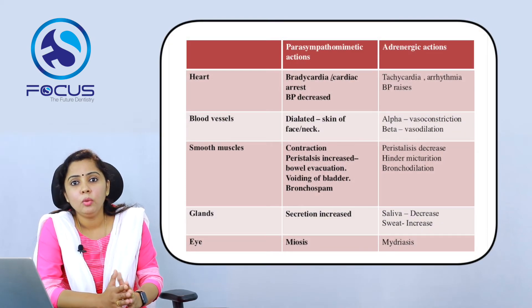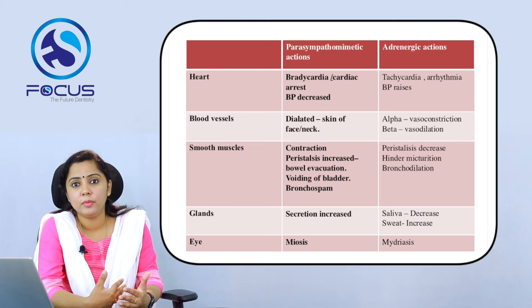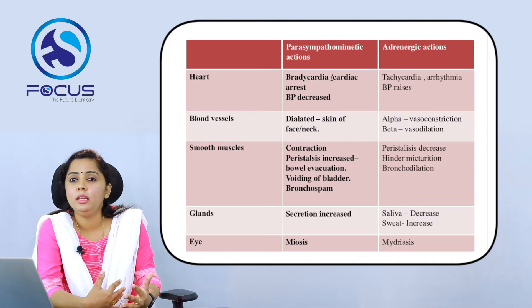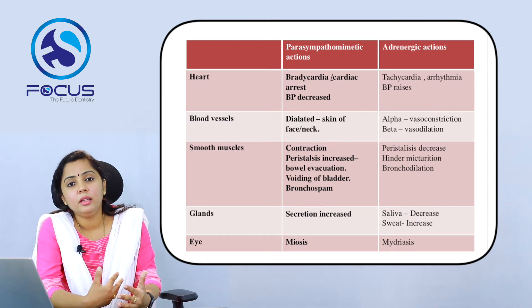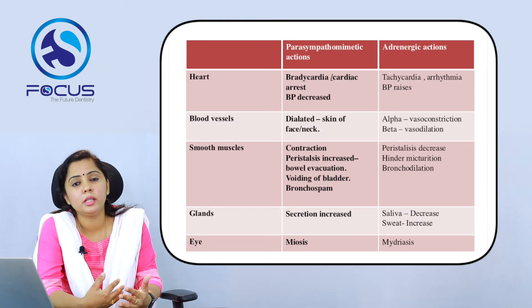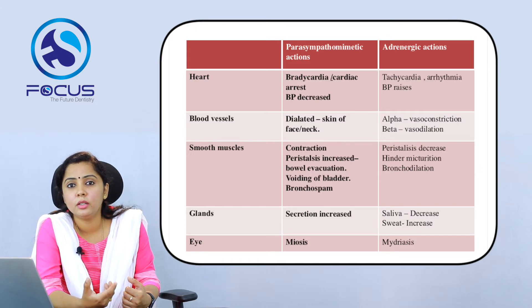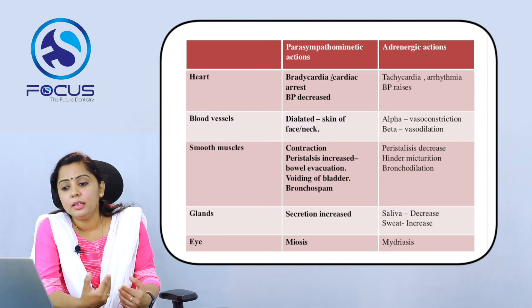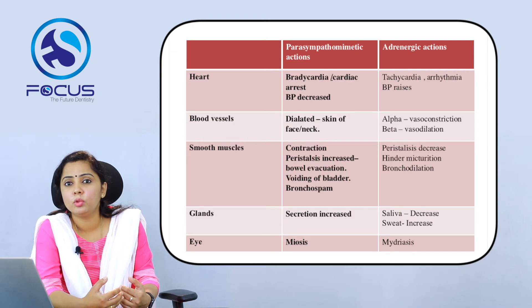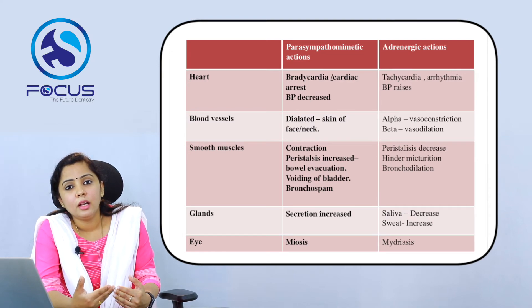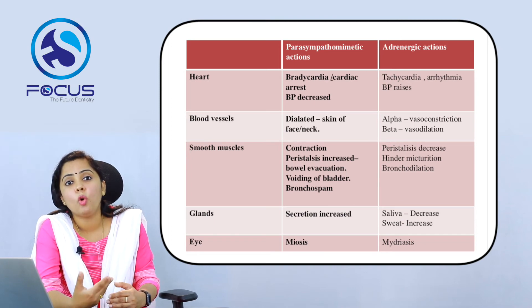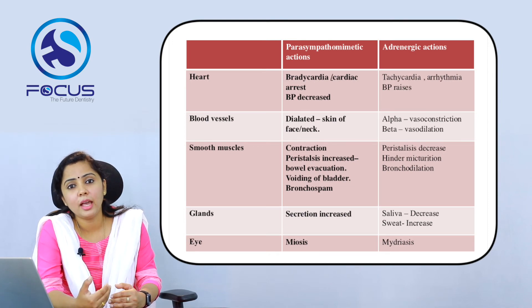The parasympathetic and sympathetic systems have opposing actions. The parasympathetic system is concerned with rest and digest. In the heart, it decreases heart rate, causing bradycardia; in toxicity, it causes cardiac arrest. It decreases blood pressure and causes vasodilation of blood vessels. On smooth muscles, it causes contraction, facilitating peristalsis, enhancing bowel evacuation, facilitating voiding of urine, and causing bronchoconstriction. On glands, it increases secretion of all glands. In the eye, it causes miosis.